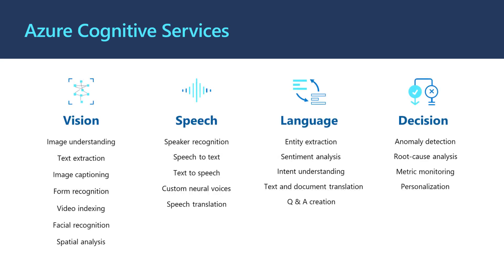Here's just an example of some of the cognitive services that are available for you to use today — things like image classification, being able to look at a business form and extract data from it, being able to do speech-to-text. The two things we're going to look at specifically today are translation services — how do we take data that's in one language and translate it to another — and also how do we look at a body of text and detect the sentiment of that text. Just know that Synapse ML has transformers for all of these cognitive services, so it's designed to make it easy for you to do this as part of your Spark jobs.